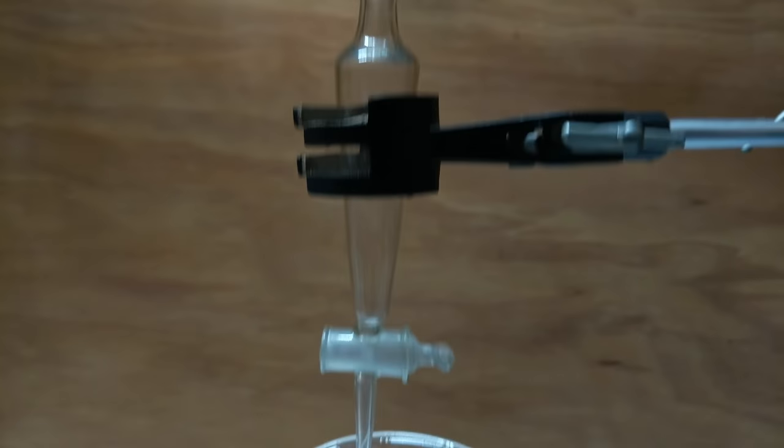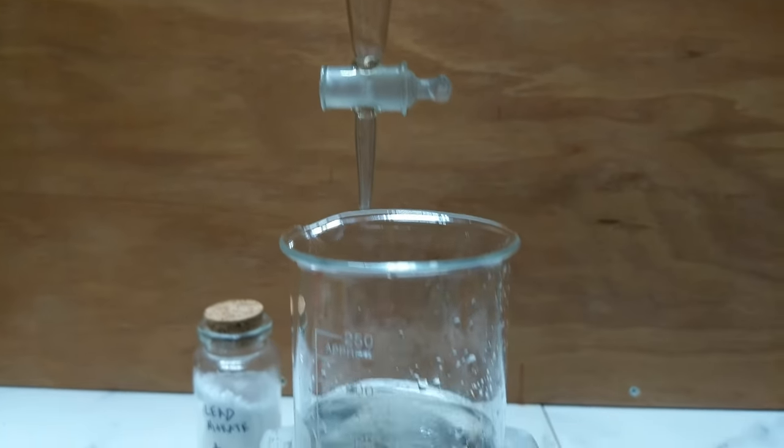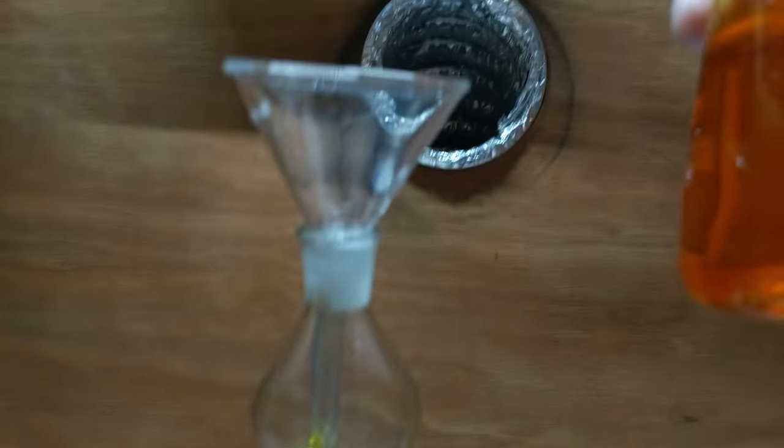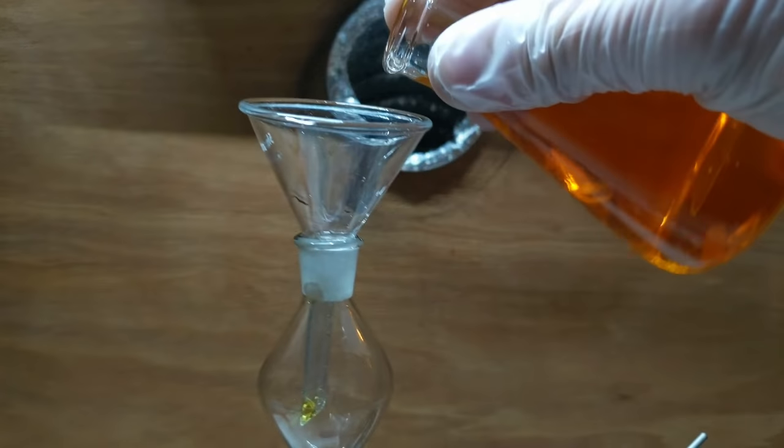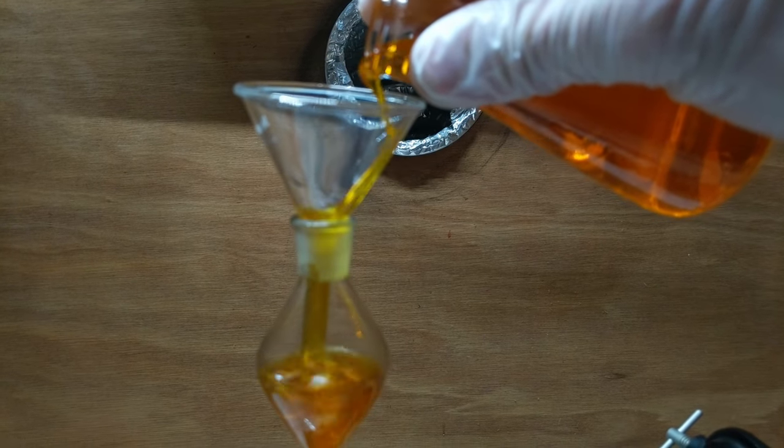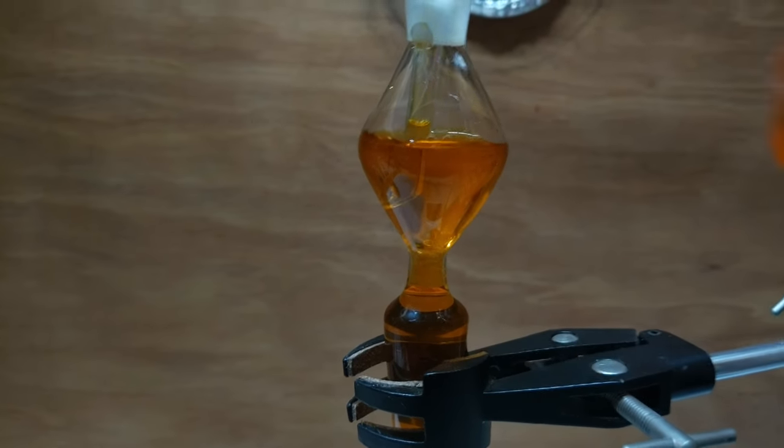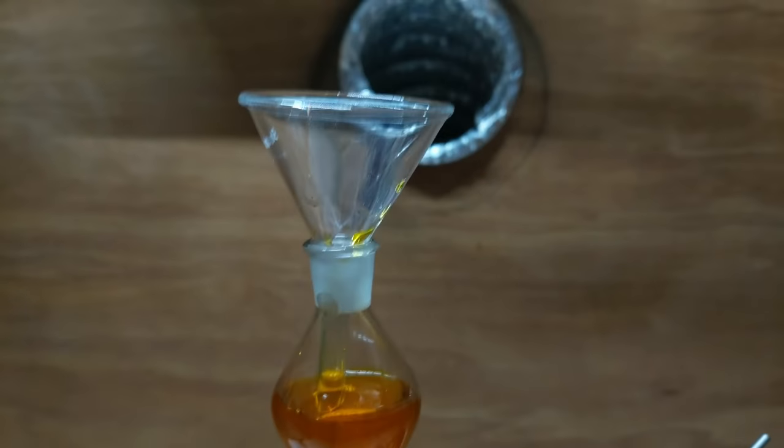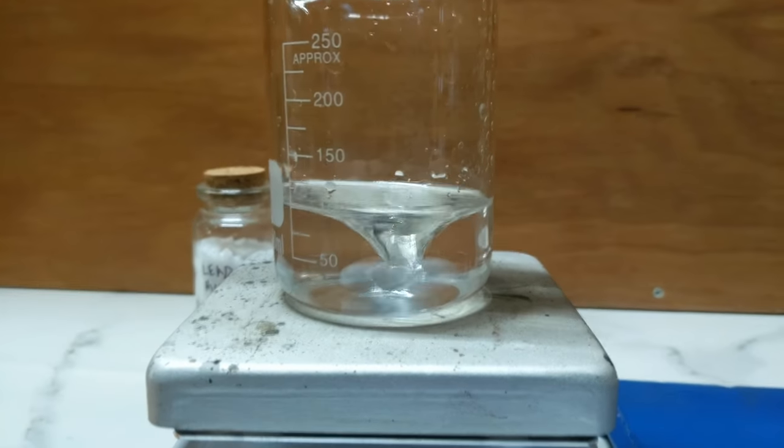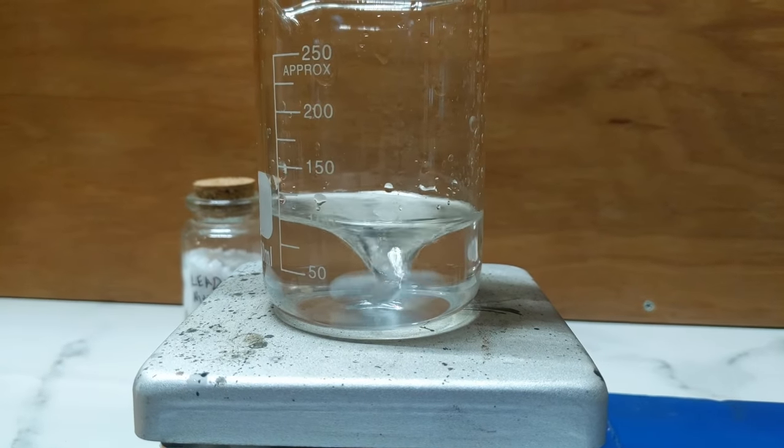So this will be our apparatus again. We're using small funnels, separatory-style funnels, and I can slowly drip the potassium chromate, which I'll just add to now. As you can see here, we will be dripping that into our lead nitrate solution.